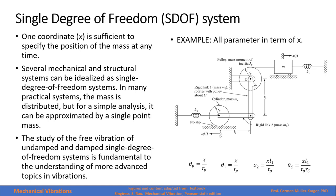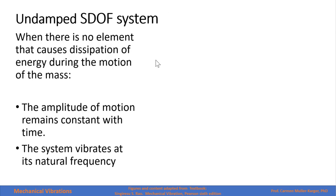The rotation of the pulley is related to displacement x as x over r_p. This rotation pushes a cylinder whose displacement of the center of mass is related to the rotation. The rotation of disc x2 is related to the displacement of x1, and that determines how much spring 2 is compressed. When there is no element causing dissipation of energy, we say the system is undamped.